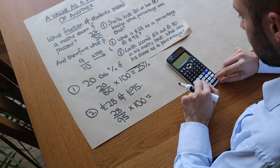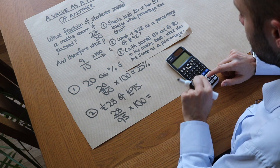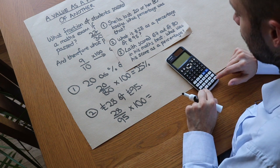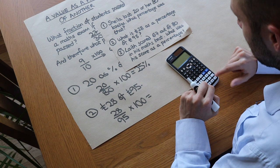28 divided by 95, and then that gives you as a decimal 0.2947. Times that by 100 because we want to convert that to a percentage.